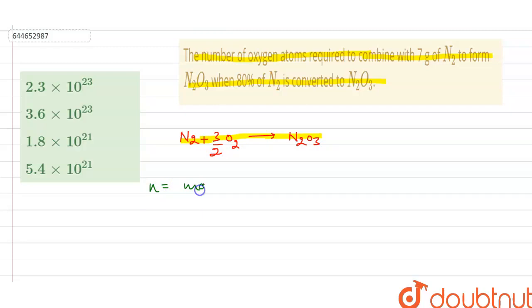Number of moles is defined as given mass upon molar mass. If we want to find the number of moles of N2 present in 7 gram, it will be 7 gram divided by the molar mass of N2, which is 28 gram per mole.